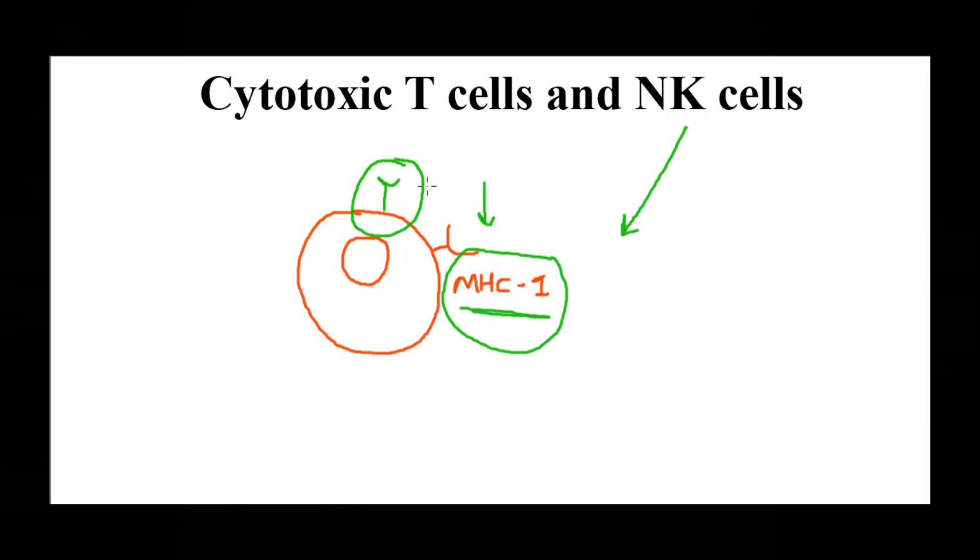NK cells can recognize this very well. This is one mechanism. There is one more mechanism where NK cells can recognize such cells when they are bound with antibodies, because NK cells have a receptor that can recognize the Fc region of the antibody.